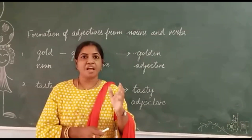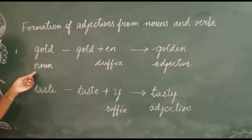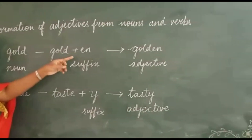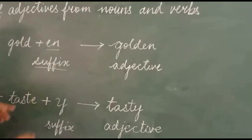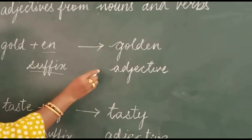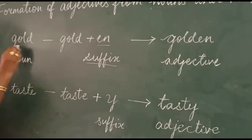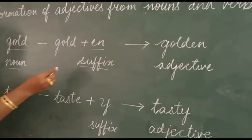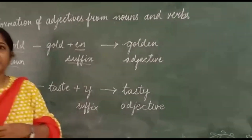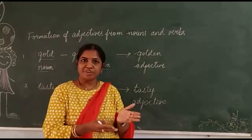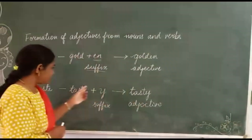Now here, gold. Gold is the noun and you are adding the suffix '-en' to form the adjective 'golden'. For example: 'My mother presented me a golden ring.' Ring is the noun and 'golden' is describing it.